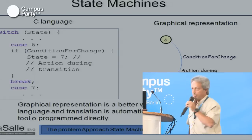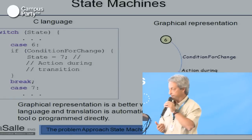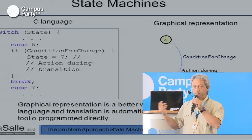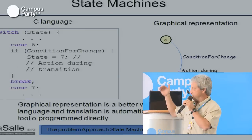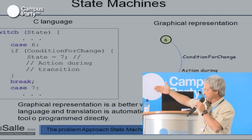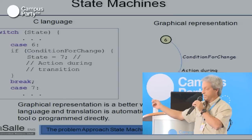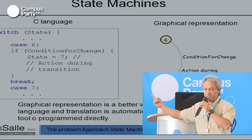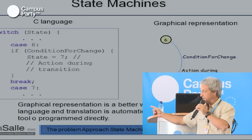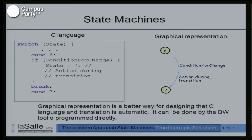More generally, a graphical representation shows, for example, changing from state 6 to state 7 in C language: if the condition for change occurs, then the next state will be state number 7, and we do actions during the transition. We write it in that manner, using a special tool in order to draw state machines with pencil and paper, for discussion and design.